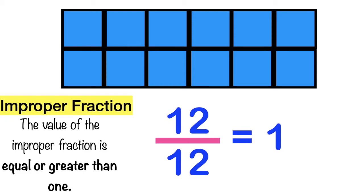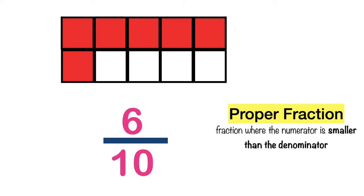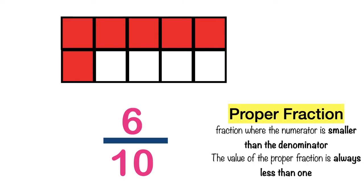Always remember, children: when you say improper fraction, the value is equal to or greater than 1. So in this case, 12 twelfths is equal to 1, so that is an improper fraction. How about if we have this? Let's write the fraction. Counting the shaded parts: 1, 2, 3, 4, 5, 6. We have 6 shaded parts, so our numerator is 6. The denominator is 10, since we have 10 equal parts. 6 tenths is what we call a proper fraction. Always remember: in a proper fraction, the numerator is smaller than the denominator, and the value is always less than 1. Why is it less than 1? Because not all the parts are shaded.